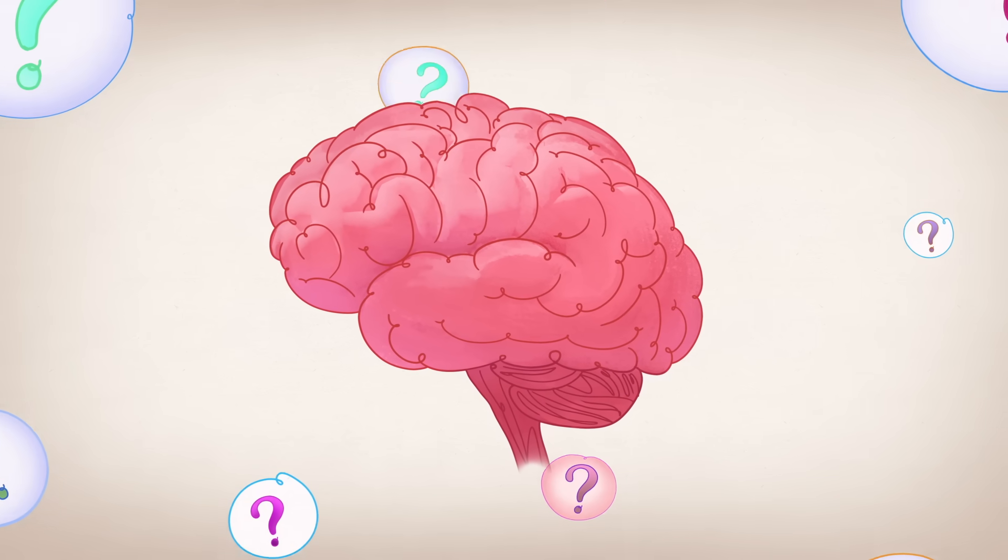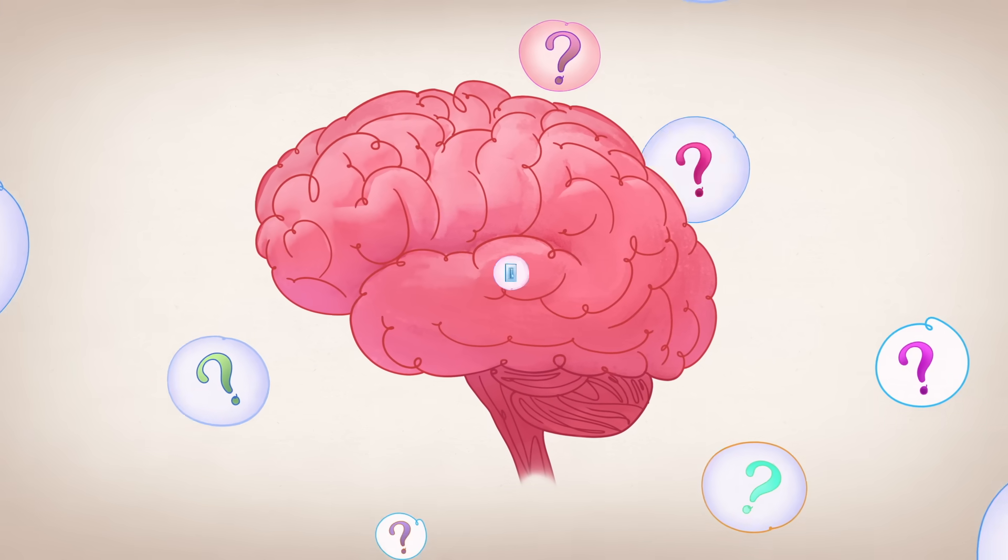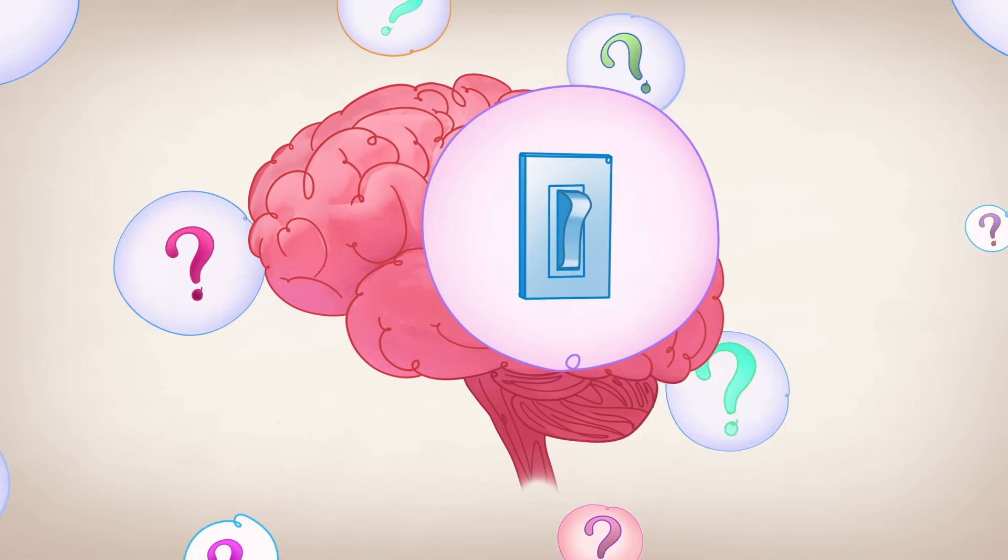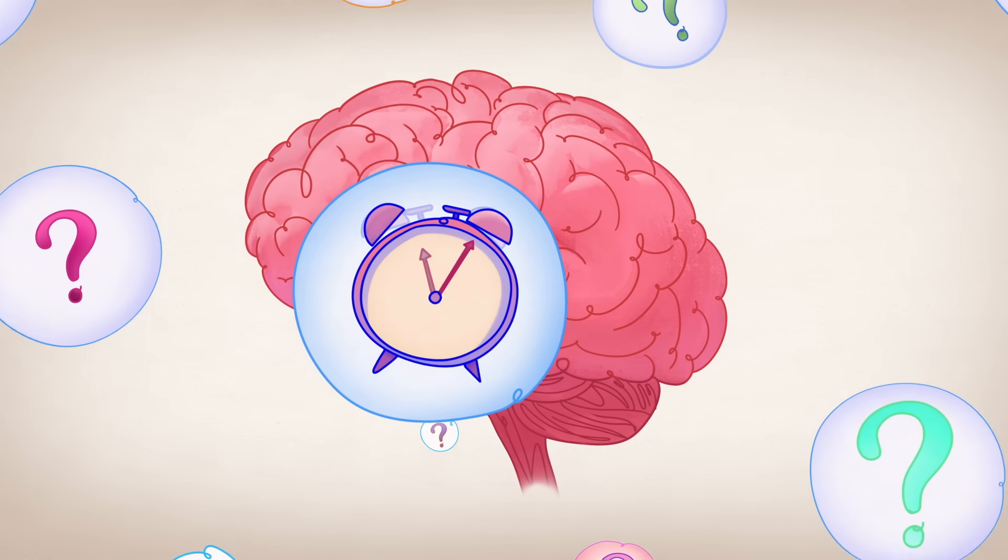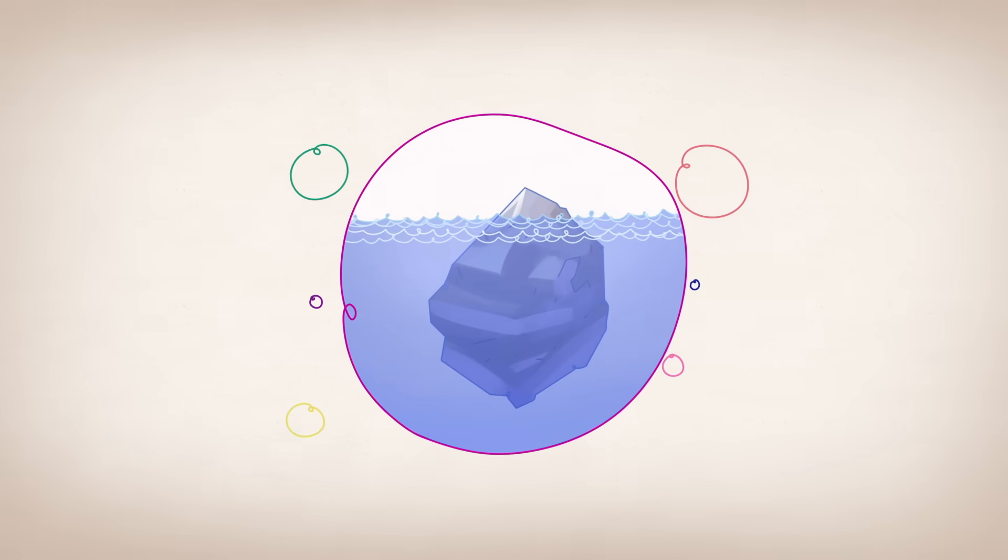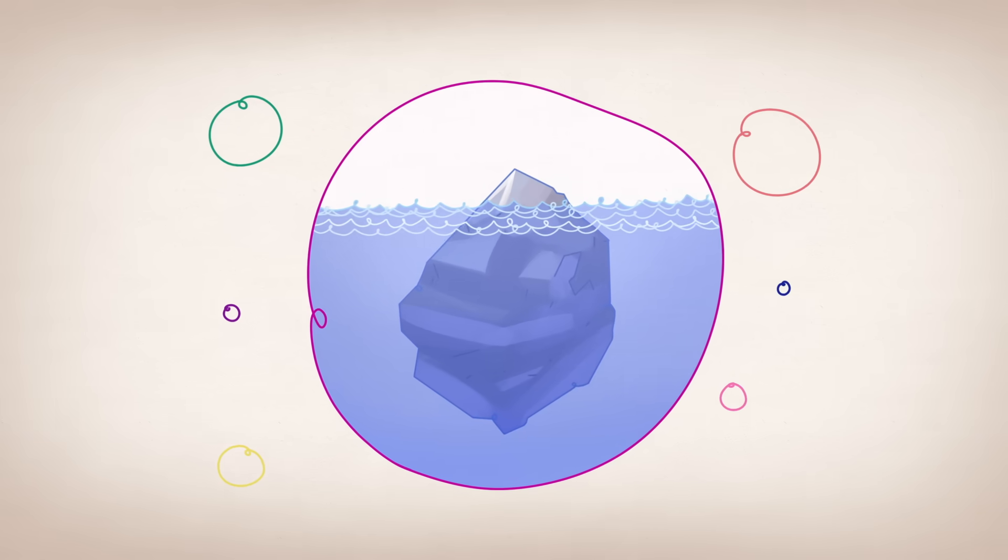For all we know about the effects of puberty on the brain, there remain many unanswered questions. What sets off the initial puberty signal in the brain? Why is the average onset of puberty shifting earlier? And while hormones may seem powerful, they may not be the full story.